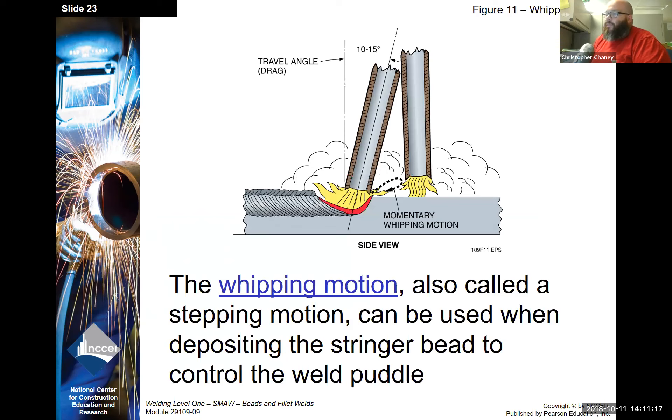Whipping motion, also called the stepping motion, can be used when depositing the stringer bead to control the weld puddle.